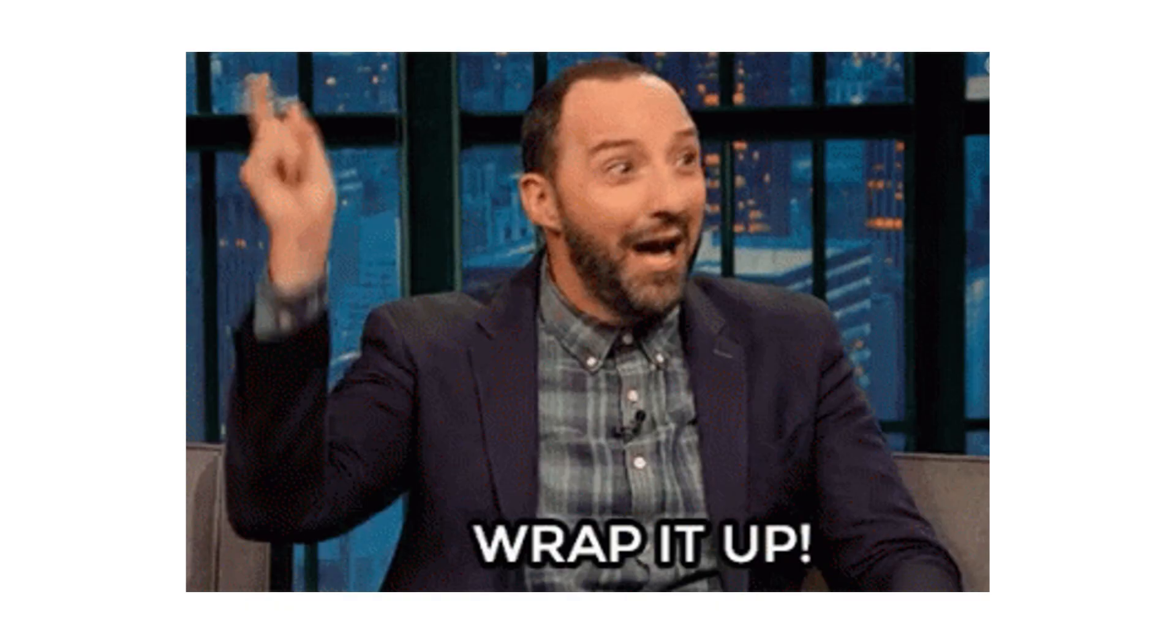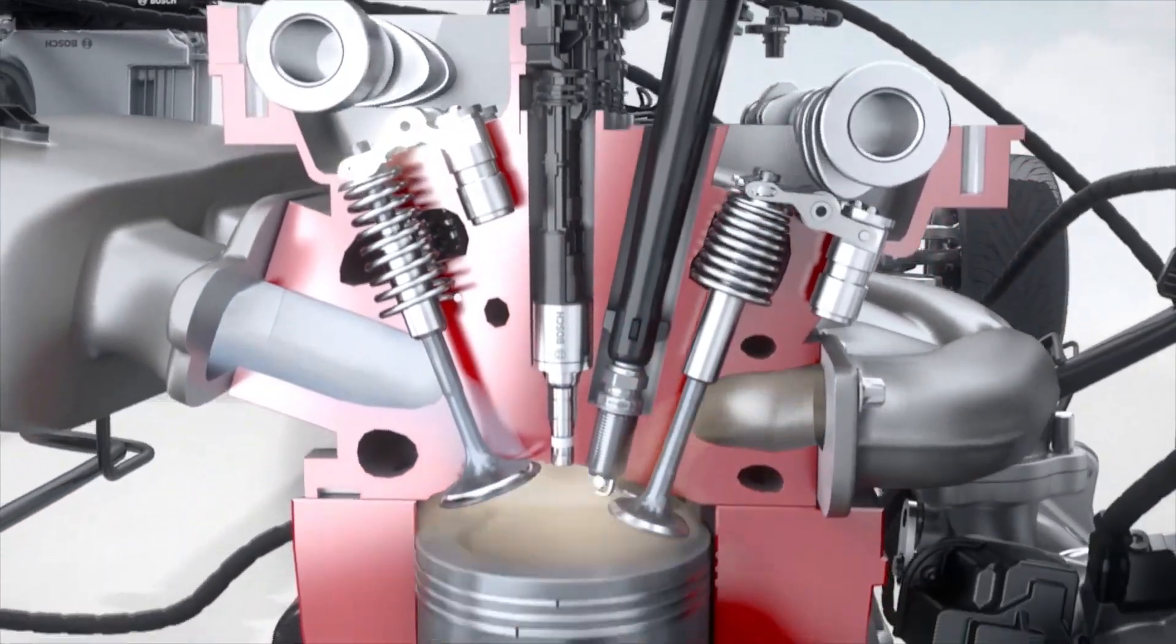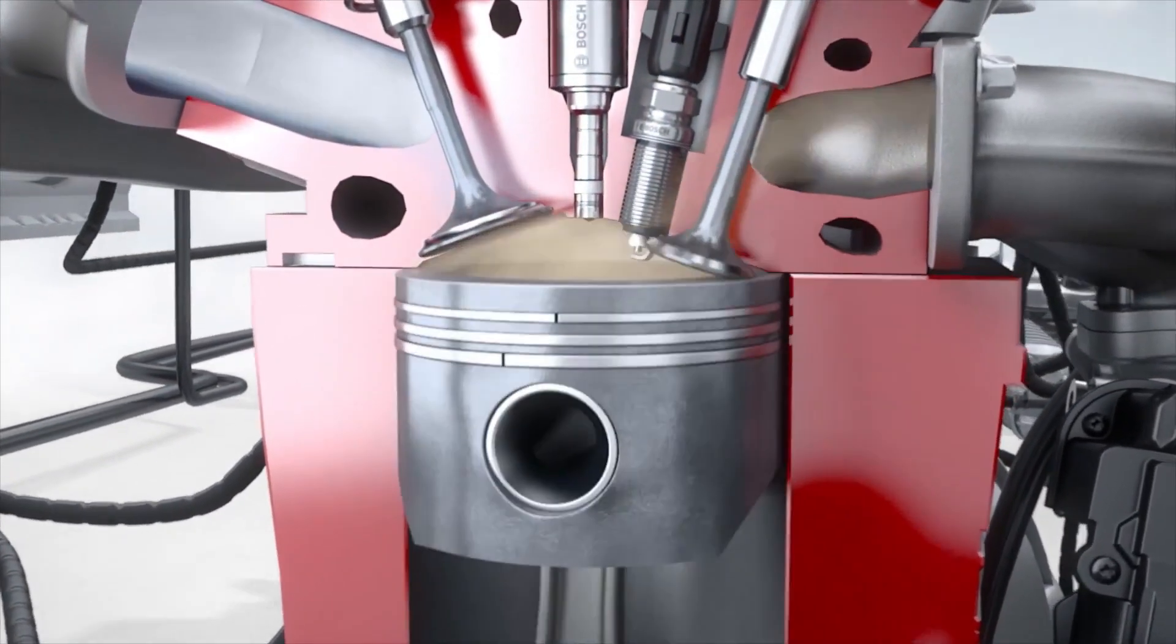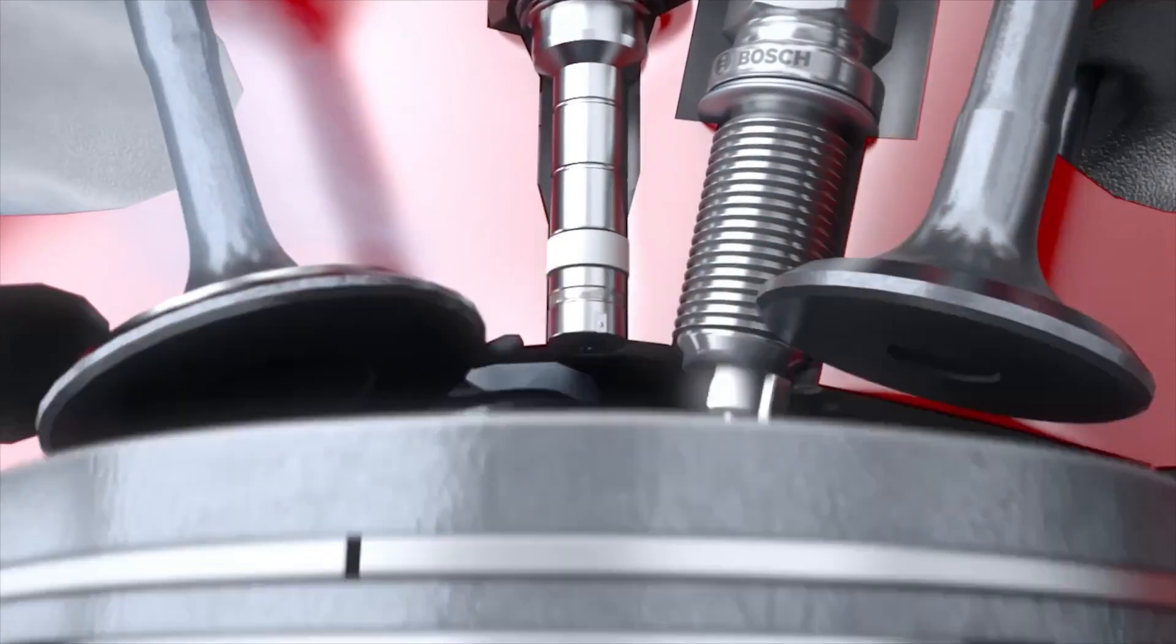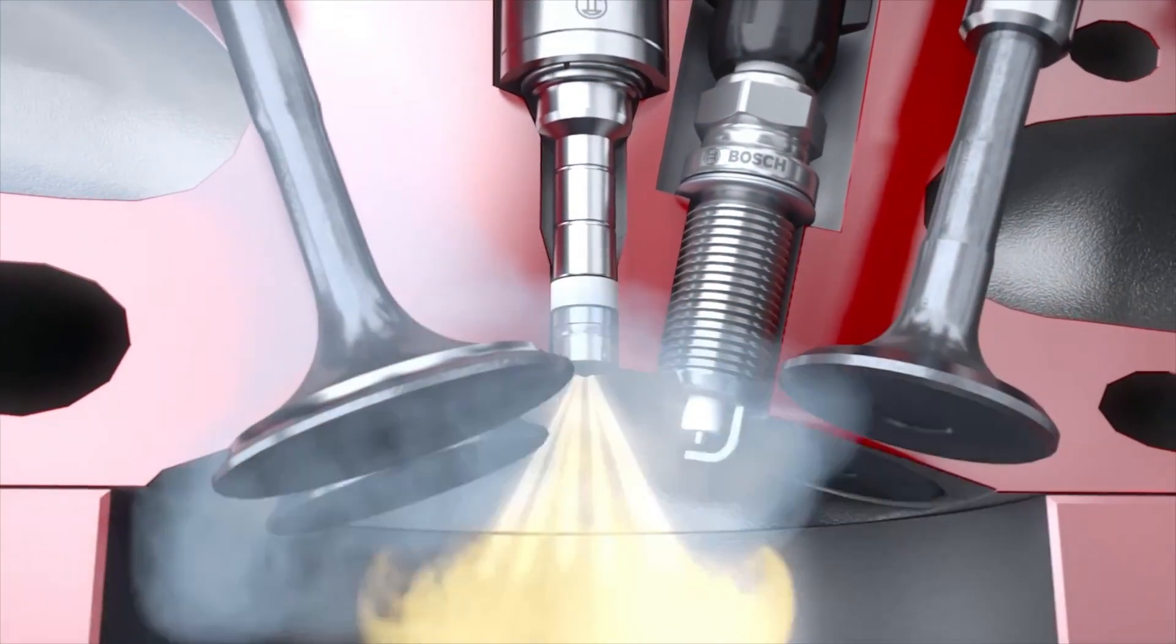So, to wrap it up, the fuel injection system is the brains behind your engine's fuel delivery. It replaces carburetors because it's more precise, more efficient, cleaner, and more adaptable. By using sensors and an ECU, it can instantly adjust to your driving conditions, making sure your engine gets the perfect mix of air and fuel.